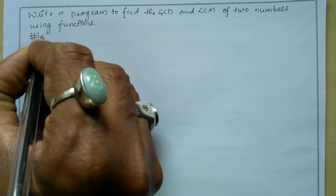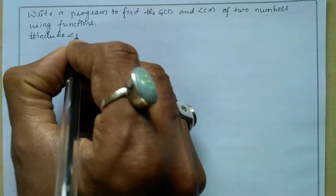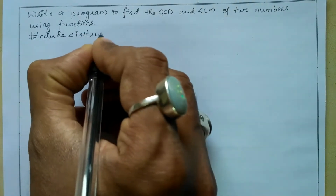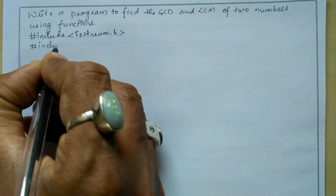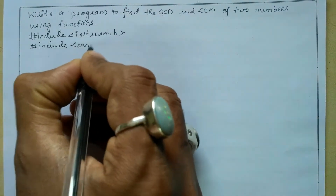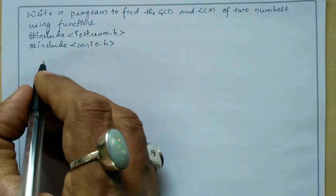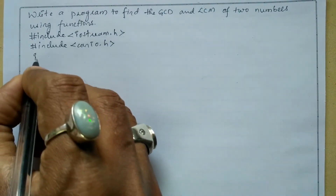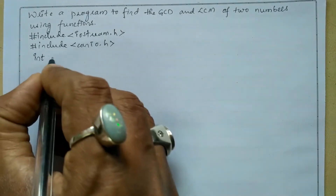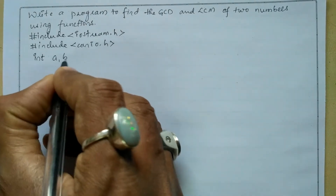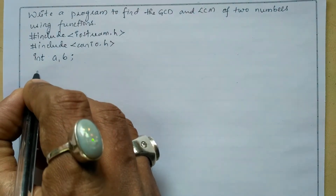Let us write the preprocessor directives: hash include in angular brace iostream.h header file, and the next preprocessor directive is hash include in angular brace console input output dot h header file. Now I'm going to declare two global variables of type integer — int a, b — and put semicolon.